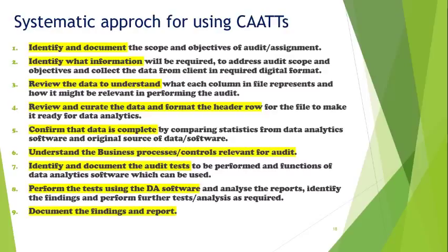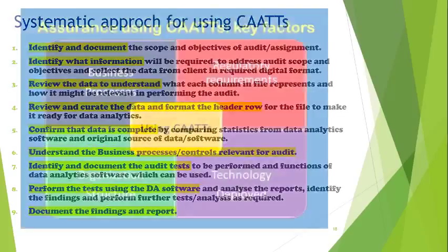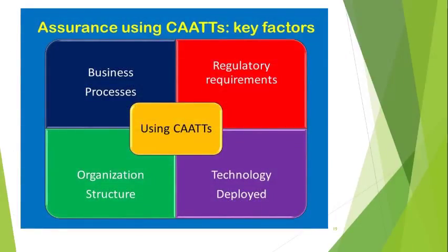We also need to understand the business process and how the controls are embedded or integrated inside the technology. We need to identify and document the audit tests to be performed and the functions of the data analytics software which can be used for the specific audit. Once documented, we perform the audit tests using the data analytics software and manual procedures as relevant, analyze our findings, and prepare the report. To summarize: to provide assurance using CATS, key factors include understanding business processes and relevant controls, regulatory and compliance requirements, the organization structure in terms of authorization limits and segregation of duties, and how technology is deployed along with the associated control risks.